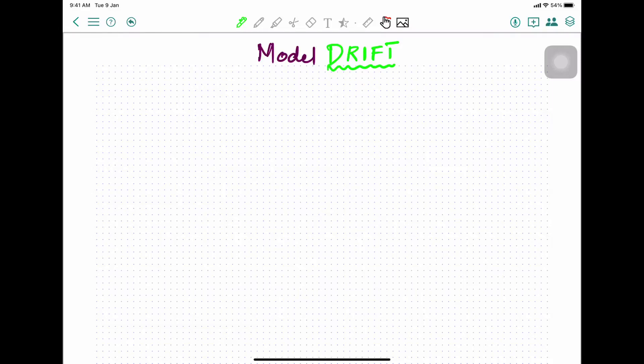Dear fellow coders, welcome to One Little Coder. If you have ever published a machine learning model in production, it's very important for you to monitor the machine learning model. Why? Because of model drift. If you have never heard about model drift, this video is going to give you a very quick summary of what model drift is and what should you do about it.